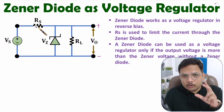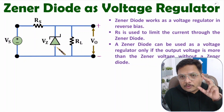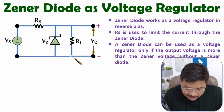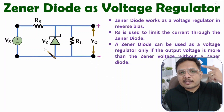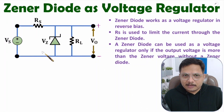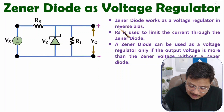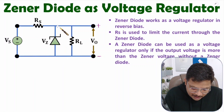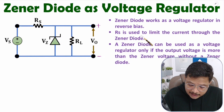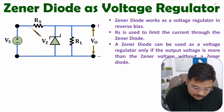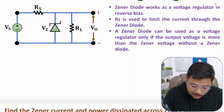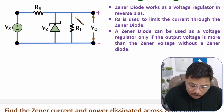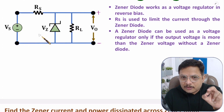One more essential thing to note: this Zener diode can be used as a voltage regulator only if the output voltage is greater than Vz. If you don't have output voltage greater than Vz, then you cannot regulate the output by Vz value. Here, Zener diode is working as a voltage regulator in reverse bias, connected across the output for voltage regulation.